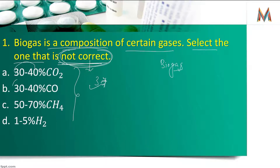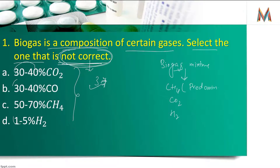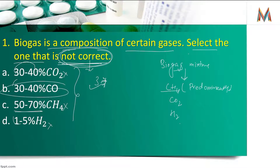NCERT ने biogas के percentage के बारे में कुछ भी नहीं कहा है, यानि यह beyond NCERT जा रहा है। अगर हम इस question को solve करें तो data मिलेगा कि biogas में mixture होता है — methane, CO2, H2 — और methane predominantly present होती है। 'Predominantly' word specially use किया है। तो अगर percentage दिया है और CH4 50% है, तो obviously CH4 predominant होगी। जो percentage cross check नहीं होता उसे eliminate करते हैं — यानि जो biogas की composition में है ही नहीं वो answer है।